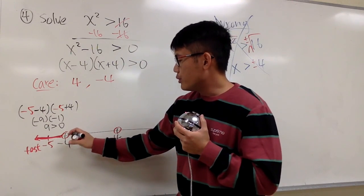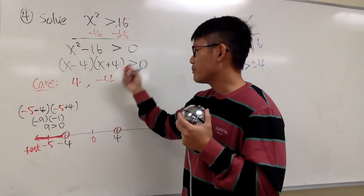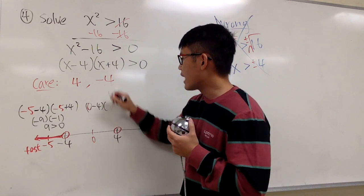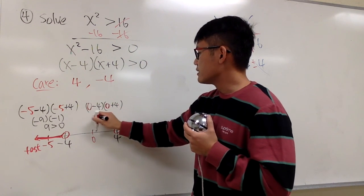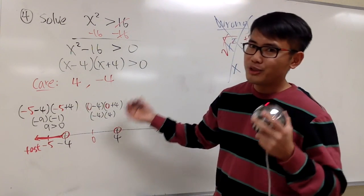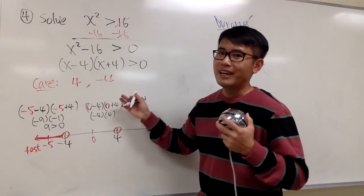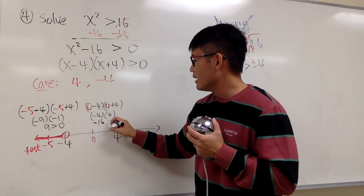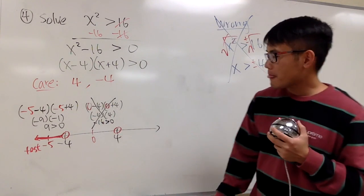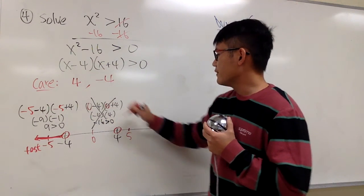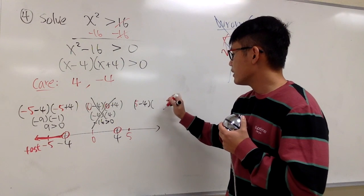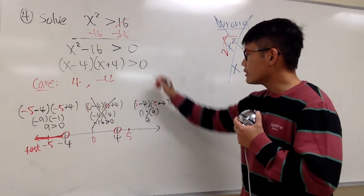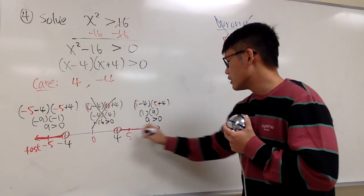For the middle interval, pick a number between negative 4 and 4 — let me use 0. Plugging in 0: (0 minus 4) times (0 plus 4) = negative 4 times 4 = negative 16. Is this greater than 0? No — so not part of the answer. For the right interval, let me use 5: (5 minus 4) times (5 plus 4) = 1 times 9 = 9. Is 9 greater than 0? Yes — so this is also part of the answer.